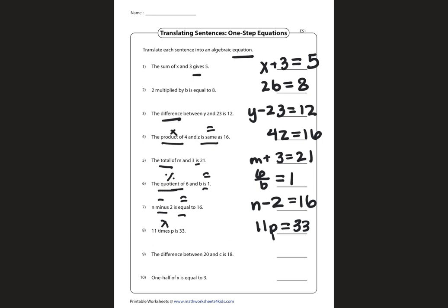The difference between 20 and c is 18. C is second, so it's going to be the second one. And difference means subtraction. So 20 minus c is equal to 18.